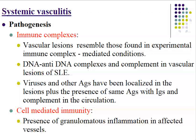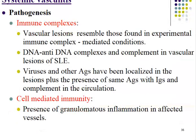In systemic lupus, there is deposition of DNA and anti-DNA, indicating the role of immune complexes in mediating vasculitis. Viruses and other antigens have been localized in lesions, along with the same antigen, immunoglobulin antibodies, and complement in the circulation. Cell-mediated immunity demonstrates granulomatous inflammation in affected vessels, supporting its role in systemic vasculitis.